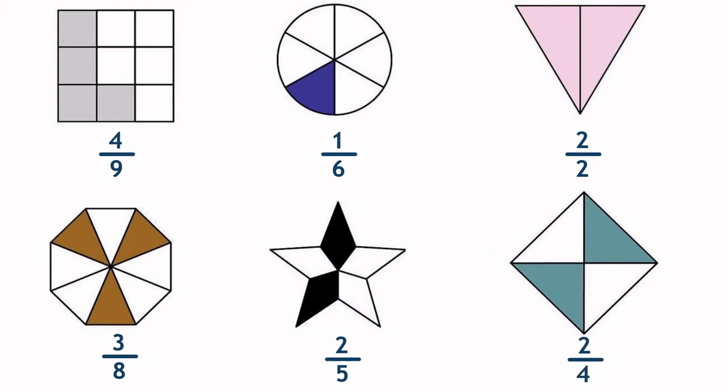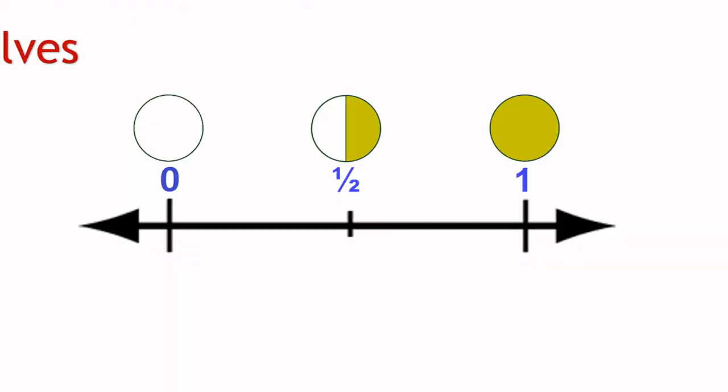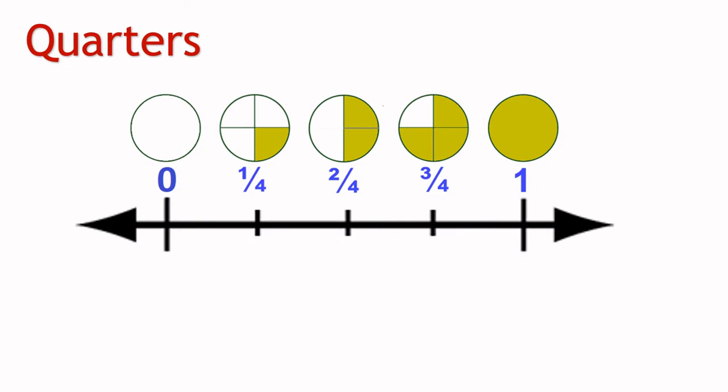On a number line, halves are shown like this. Quarters are shown like this. Fifths are shown like this.